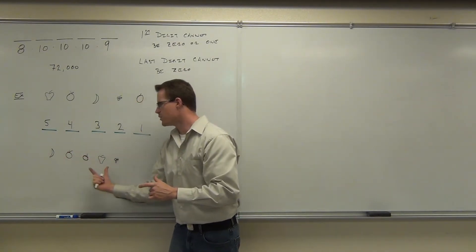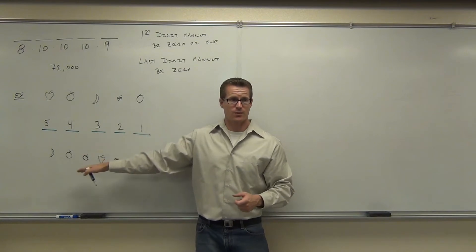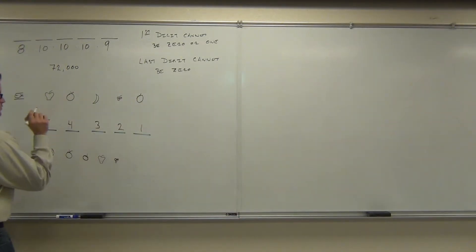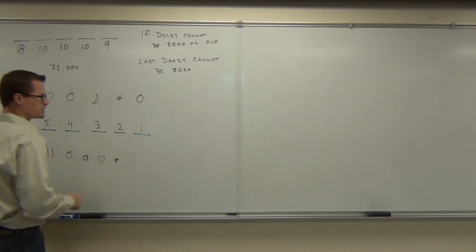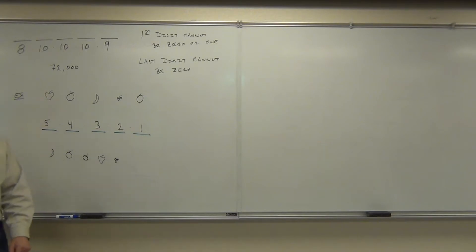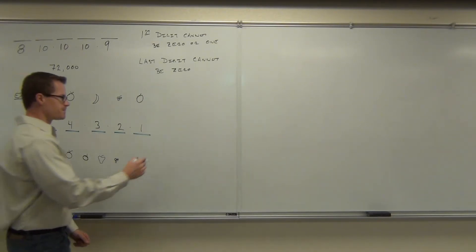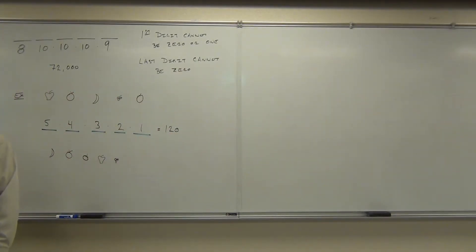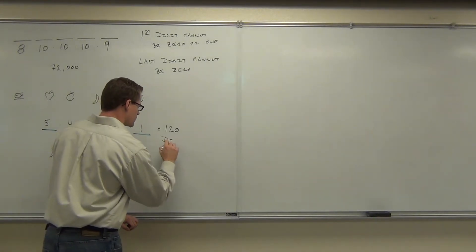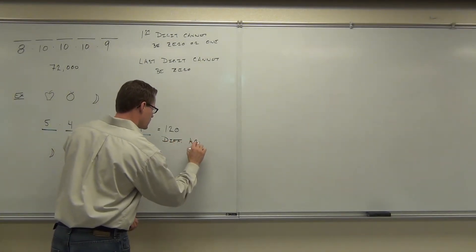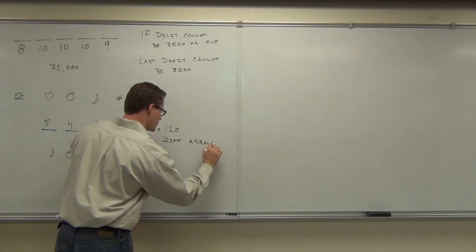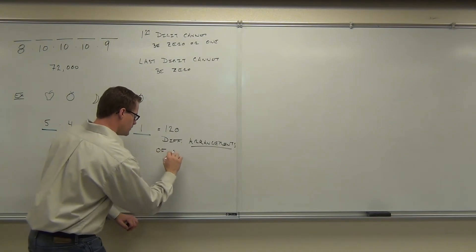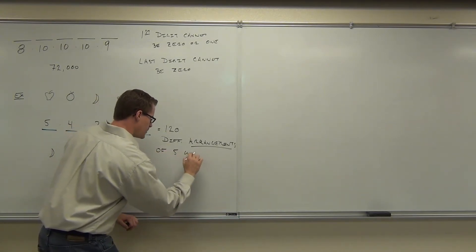So, you have five choices here, but then four, three, two, one. This counts as a different arrangement than this one. Does that make sense? The number of ways we can do this is... I have five choices first, four choices second, three, two, then one. You multiply all those together, you're going to get how much? 120. 120. What that means is you have 120 different arrangements of these five fruits.